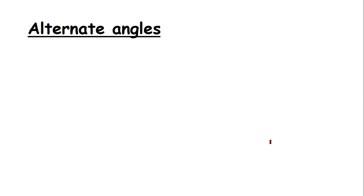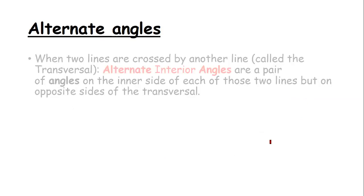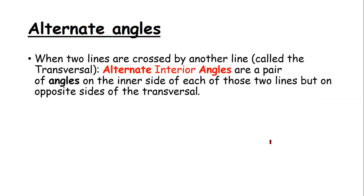Alternate angles — what are these? When two lines are crossed by another line: when two lines that are parallel are crossed by another line called a transversal line, alternate angles are a pair of angles on the inner side of each of these two lines but on opposite sides.